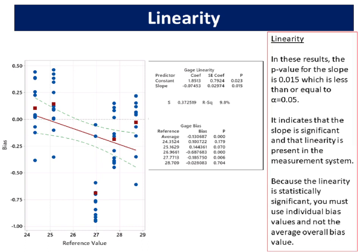In these results, the p-value for the slope is 0.015 which is less than or equal to alpha equals 0.05. It indicates that the slope is significant and that linearity is present in the measurement system. Because the linearity is statistically significant, you must use individual bias values and not the average overall bias value.